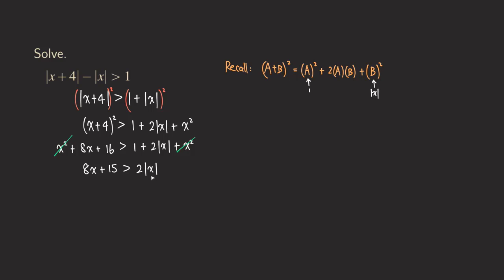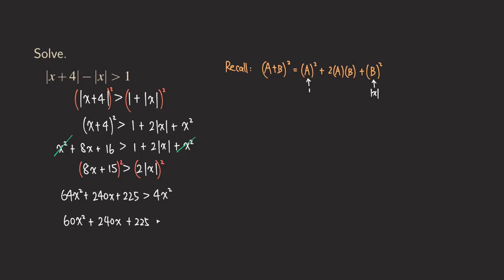So now what we're going to do is square both sides again. Remember you have to square the whole thing. Squaring the left expression we get 64x squared, and then 8x times 15 is 120, doubled gives 240x, and 15 squared is 225. The right side becomes 4x squared. So there is no more absolute value — we really just have a quadratic inequality. Moving everything to one side, subtracting 4x squared from both sides, we get 60x squared plus 240x plus 225 greater than zero.